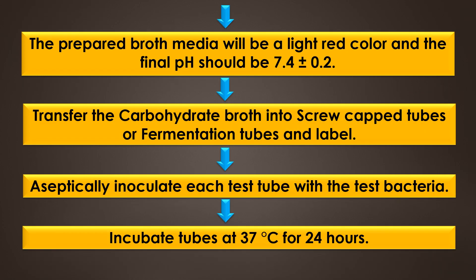After autoclaving, the prepared broth media will be a light red color and the final pH should be 7.4 plus or minus 0.2. After that, transfer the carbohydrate broth into screw cap tubes or fermentation tubes and label. Then, aseptically inoculate each test tube with the test bacterial culture using an inoculation loop. Incubate the tubes at 37 degrees Celsius for 24 hours. A longer incubation period may be required to confirm a negative result.